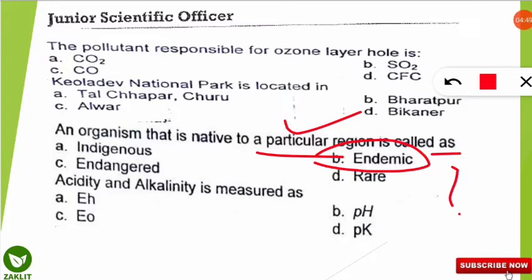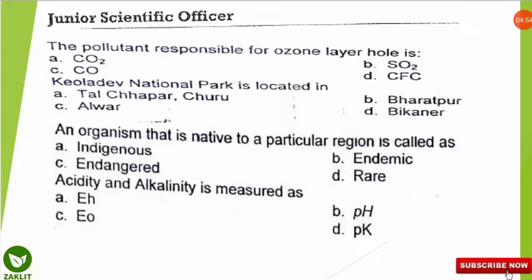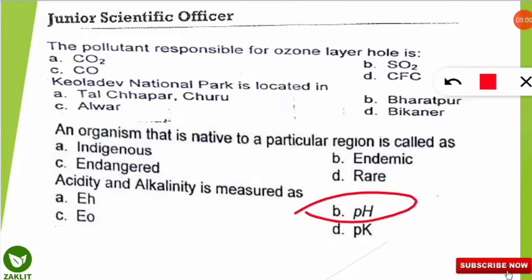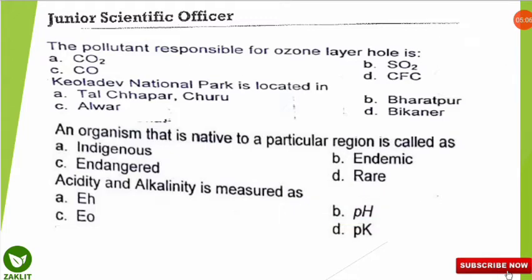The next question is also quite easy: acidity and alkalinity is measured as what? The correct option is B — they are measured in terms of pH value. You should know that 1 to 6 is the acidic range, 7 is the neutral point, and 8 to 14 is the basic, that is alkaline, range on the pH scale.